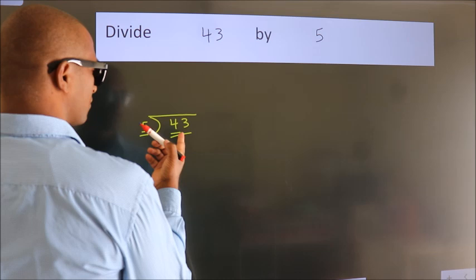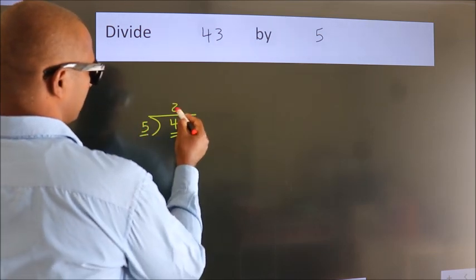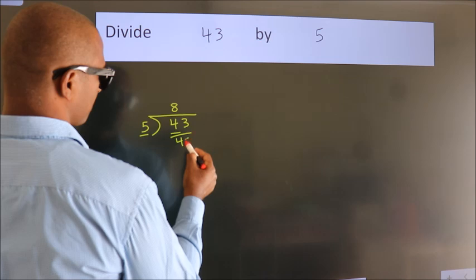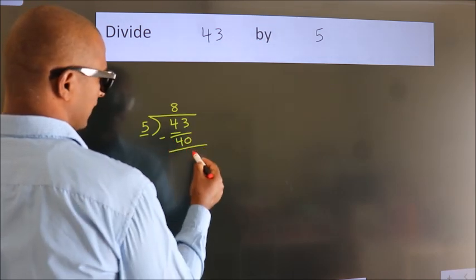A number close to 43 in the 5 table is 5 times 8 equals 40. Now we should subtract. We get 3.